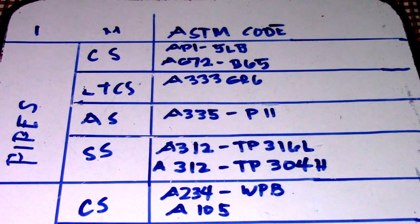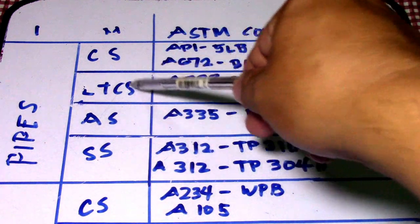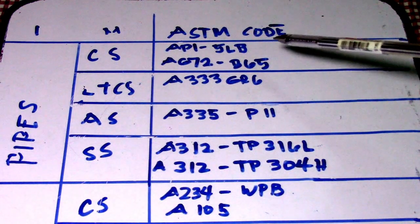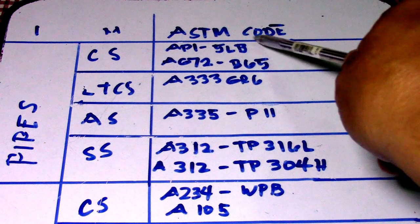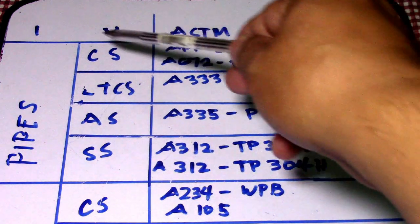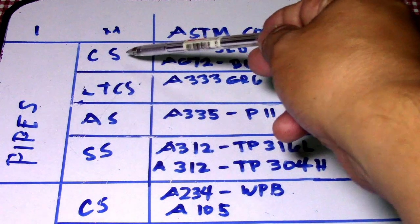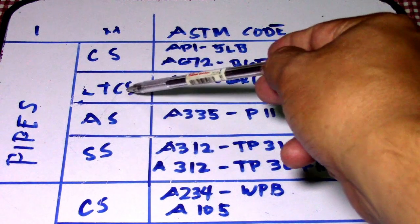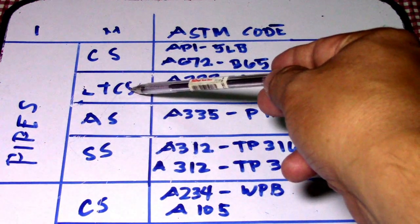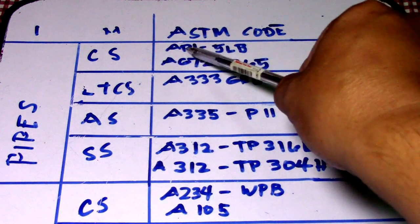Hi guys, welcome to the Piping Welding and NDT channel. This is a color coding table. The table lists material types with their corresponding ASTM codes — ASTM stands for American Society for Testing and Materials. For pipes, the materials are: CS (carbon steel), LTCS (low-temperature carbon steel), AS (alloy steel), and SS (stainless steel). The carbon steel ASTM code is A5LB.